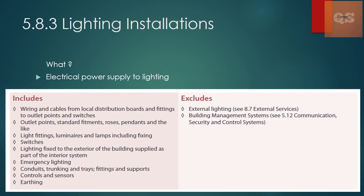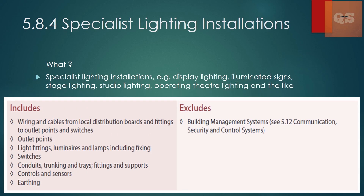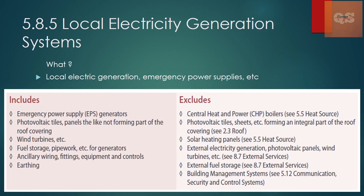Section 5.8.4 covers Specialist Lighting Installation. This includes specialist lights such as display lighting, illuminated signage, and stage lighting — anything special other than normal interior lighting. The inclusions and exclusions are almost similar to the normal lighting installation section.